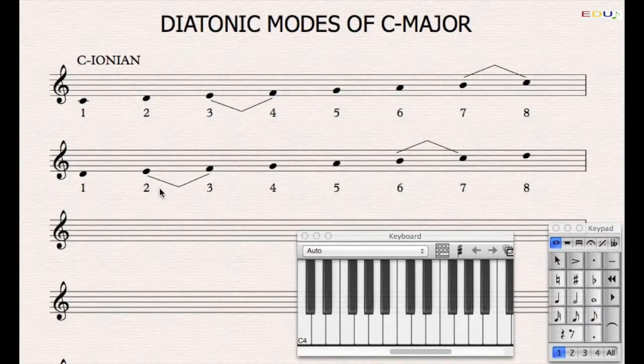We see that the semitone positions have changed from 3 to 4 to 2 to 3, and from 7 to 8 to 6 and 7. Now we created a different sort of scale. This scale is called Dorian.